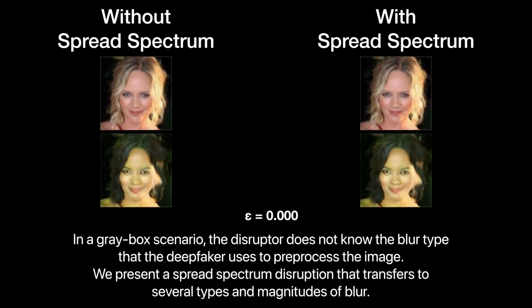In a gray box scenario, the disruptor does not know the blur type that the deepfaker uses to preprocess the image. We present a spread spectrum disruption that transfers to several types and magnitudes of the blur.